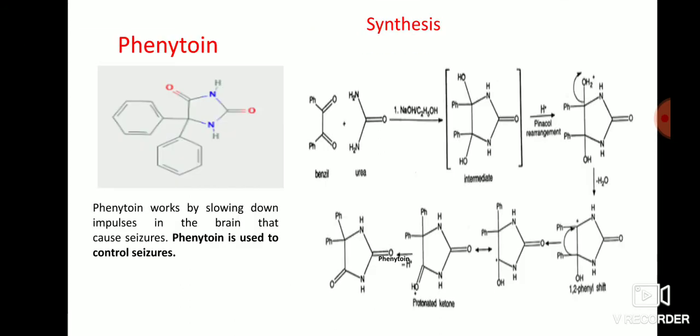Synthesis of phenytoin: several substituted hydantoins are involved in the synthesis. The condensation reaction involves benzaldehyde and urea in the presence of sodium hydroxide and ethanol. The intermediate compound formed undergoes a pinacol-pinacolone rearrangement. In the next step, a 1,2-phenyl shift occurs — shifting one phenyl from one carbon to another — to form an intermediate compound. This compound then undergoes protonation, meaning addition of hydrogen, to form the phenytoin structure.